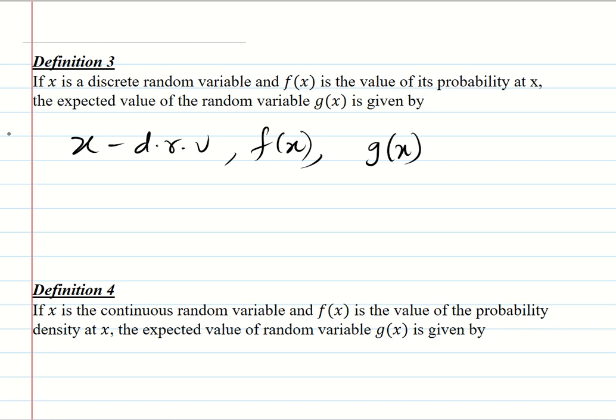Previously we said that expectation of X equals summation from i=1 to n of x_i times f(x_i). Therefore, expectation of G(X) is equal to